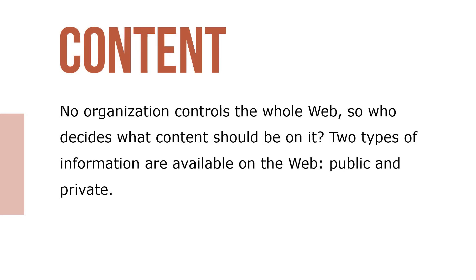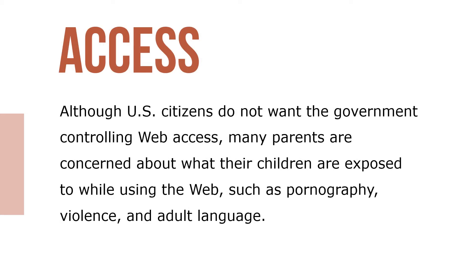No organization controls the whole web, so who decides what content should be put on it? Two types of information are available on the web: public and private. Although U.S. citizens do not want the government controlling web access, many parents are concerned about what their children are exposed to while using the web, such as pornography, violence, and adult language.